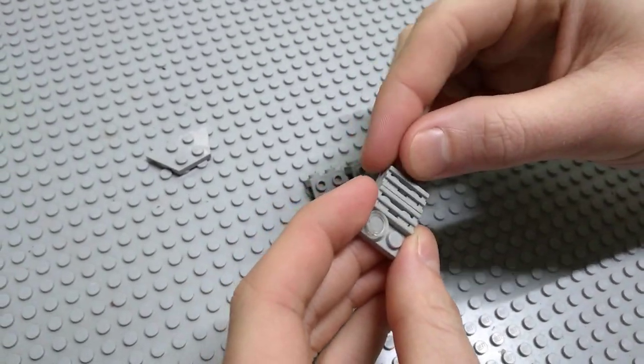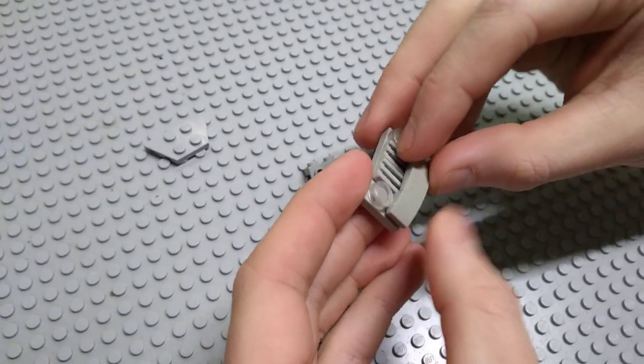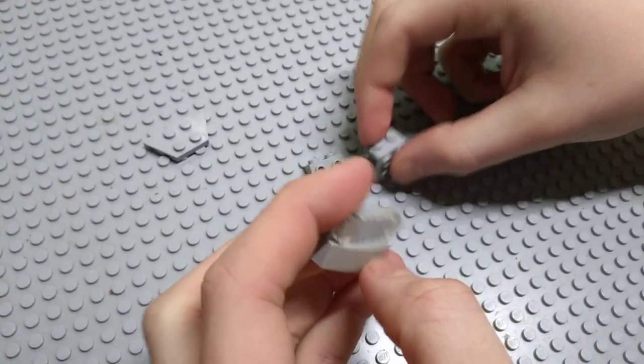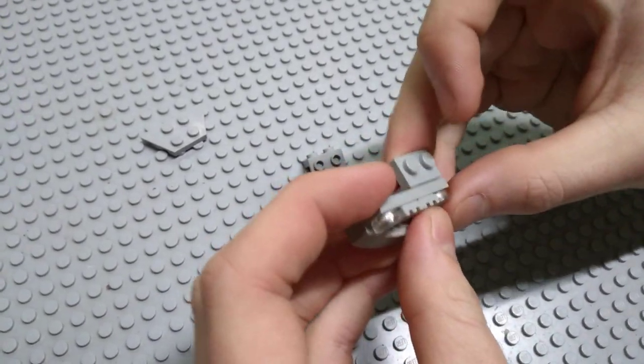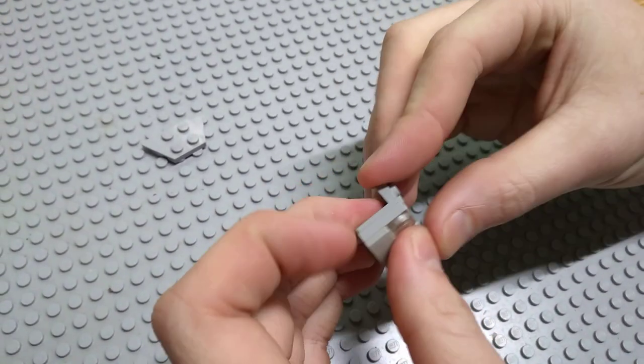If you guys want to build a full-size Gladiator 6x6, check out our other video on the Gladiator 6x6 and all you have to do is add another axle to it, and that should work for you.